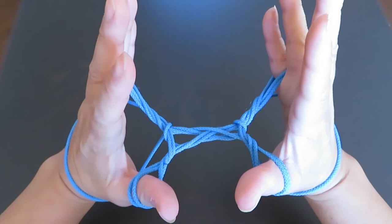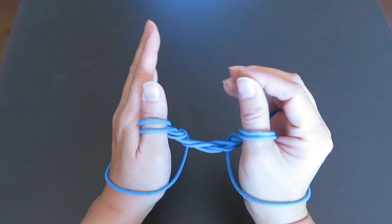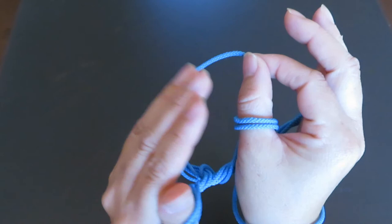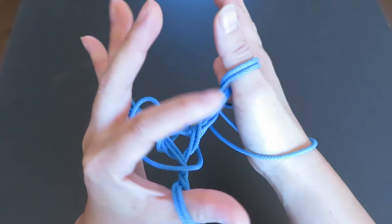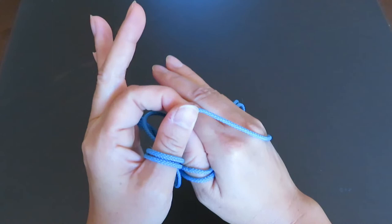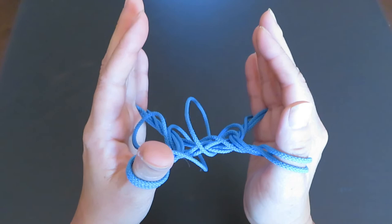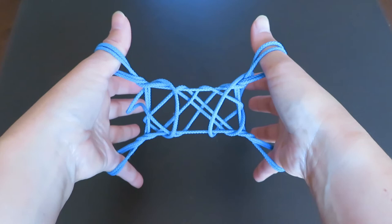Now, almost the end. With right hand, pick this horizontal string back of the left hand, and bring it in front, like this. And with the left hand, do the same. So pick the horizontal string back of the right hand, and slide over to the front. And rotate your hands, and just pull to the side.